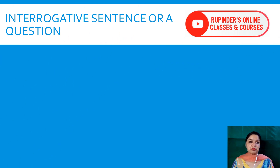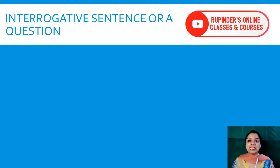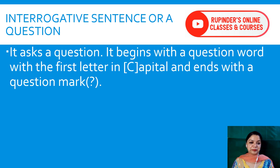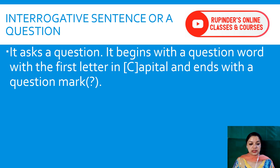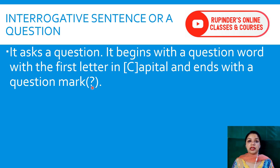The second type of sentence is the interrogative sentence, or a question. In this type, a question is asked. When we ask a question, we end that sentence with a question mark. It asks a question, begins with a question word with the first letter in capital, and ends with a question mark. When speaking, your tone should also reflect a question — 'How are you?'